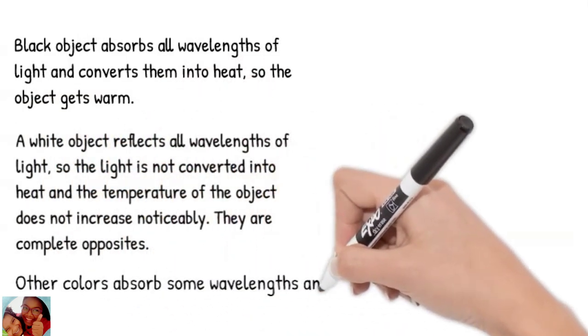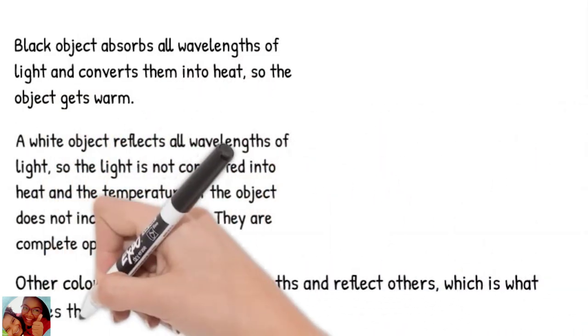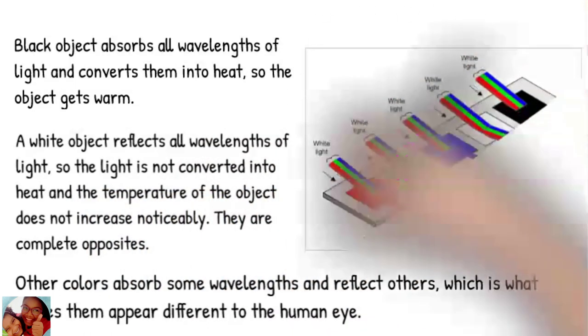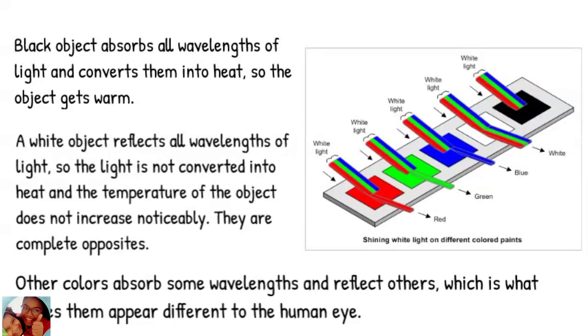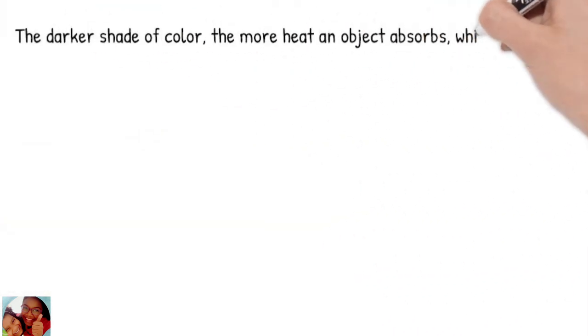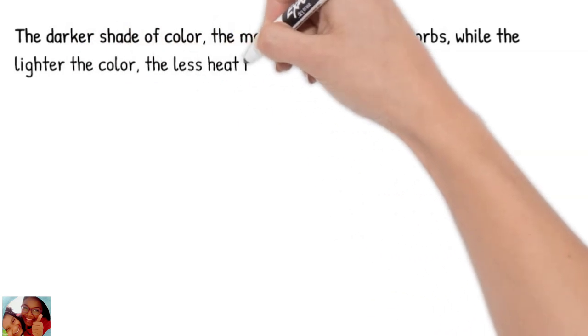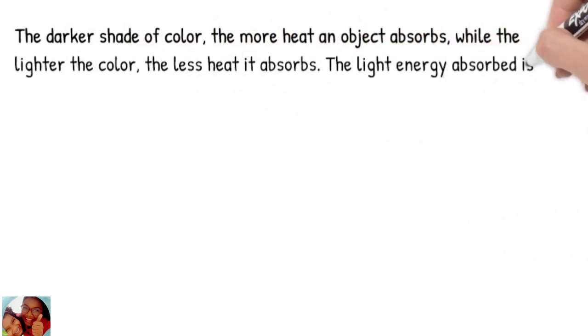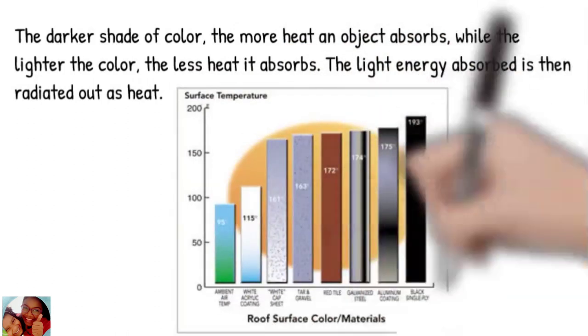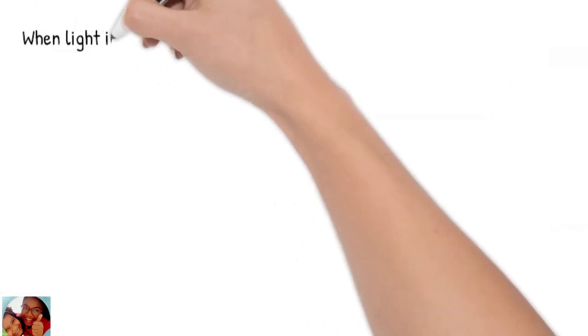They are quite opposites. Other colors absorb some wavelengths and reflect others, which is what makes them appear different to a human eye. The darker shade of color, the more heat an object absorbs. While the lighter the color, the less heat it absorbs. The light energy absorbed is then radiated out as heat.